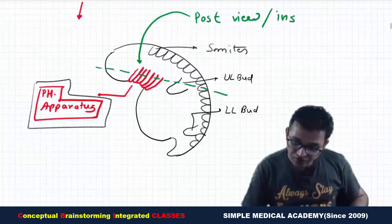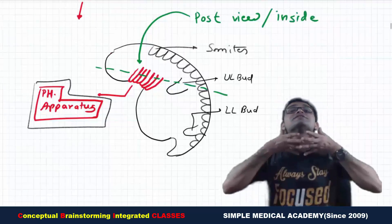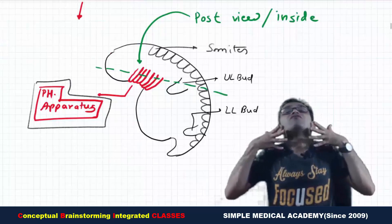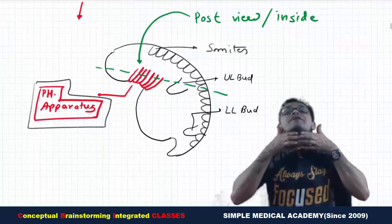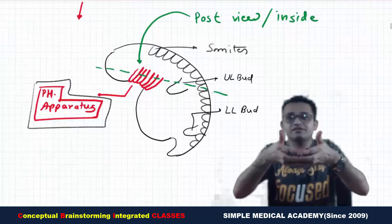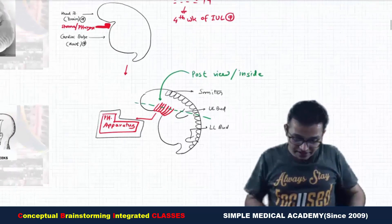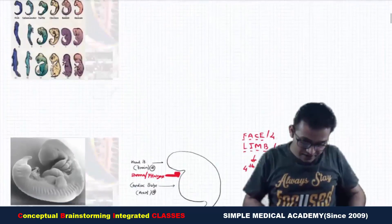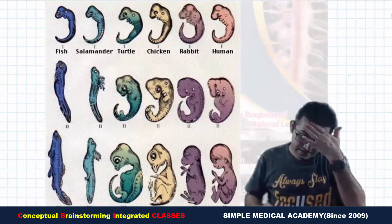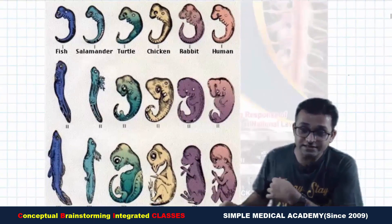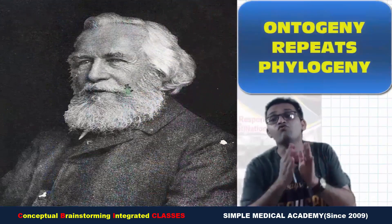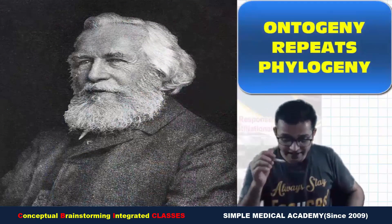The somites divide to form the sclerotome, myotome, and dermatome — which we will study in the general embryology part. Now we are going to cut the pharyngeal apparatus part from the pharyngeal cavity and look at the baby from the posterior side. These pharyngeal arches grow from each side of the neck region, meeting at the midline. One very interesting fact from Gray's Anatomy relates to what we have known since school.